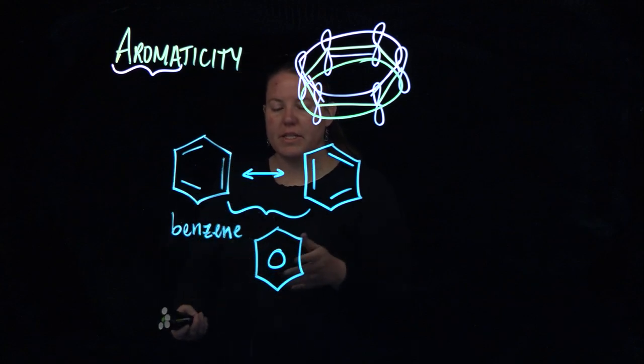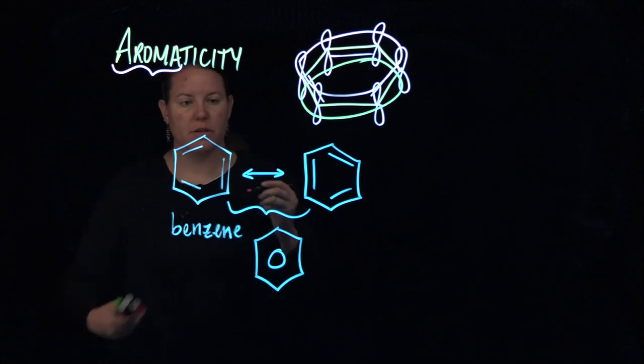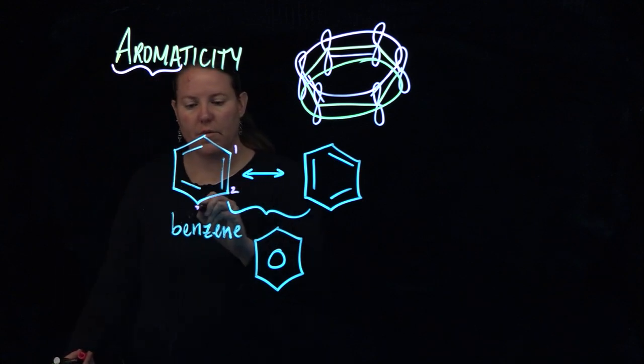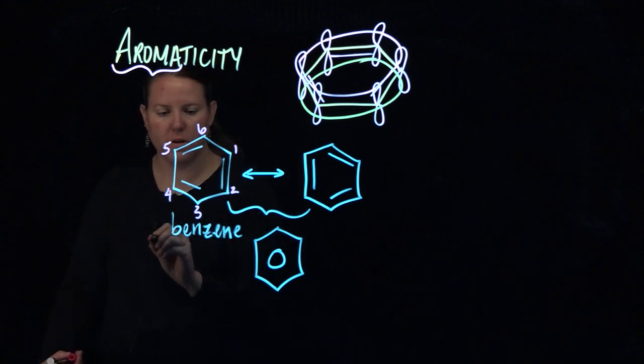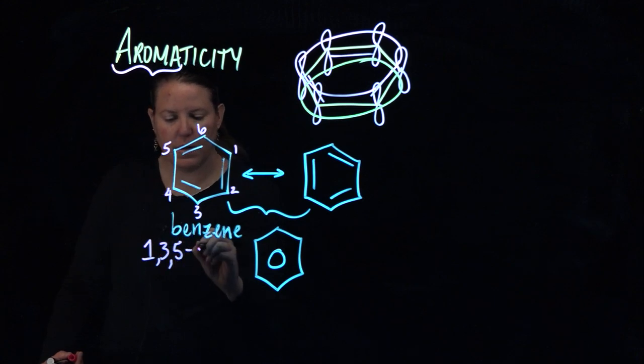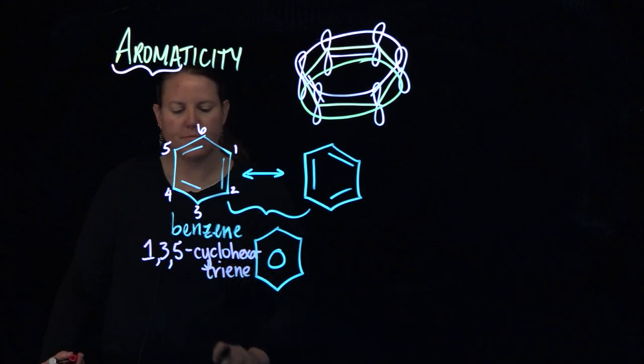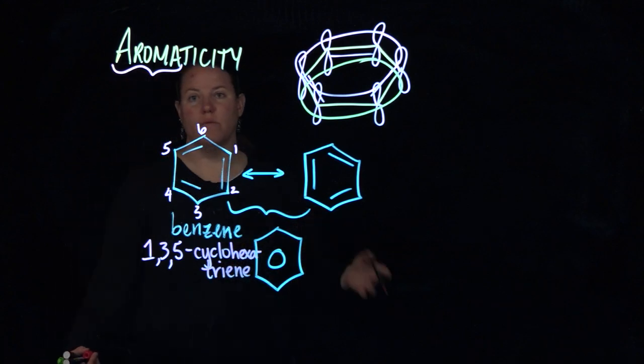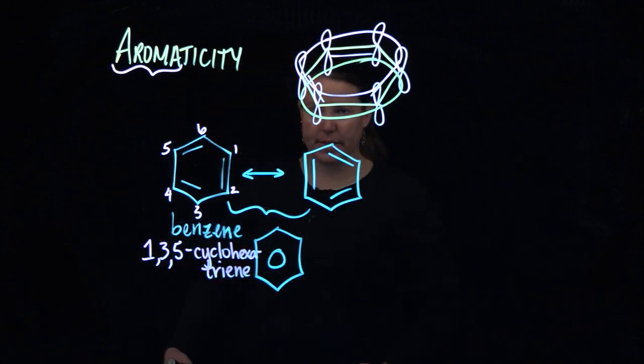So benzene is, of course, a common name. If I were going to name this in my regular way, I would number it first, right? And this would in fact be called 1,3,5-cyclohexatriene. Or you could call it cyclohexa-1,3,5-triene. Tri- meaning three, ene meaning double bonds, okay?